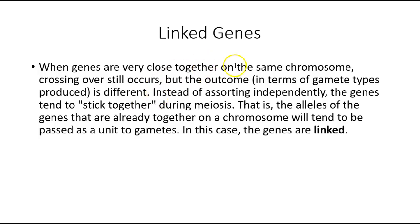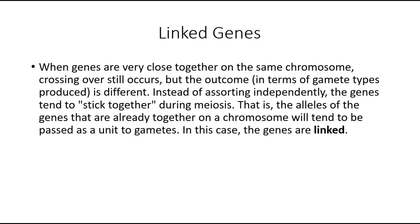Linked genes, of course, are when they're very close together. Crossing over still occurs, but basically the gamete numbers are different. And because they stick together, we tend to call them linked. So let's do an example of that.